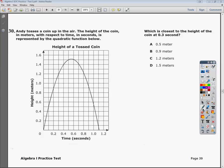The question asks you, which is the closest to the height of the coin at 0.3 seconds? This question is really easy. I don't know why you would miss it other than you just overthink the question.